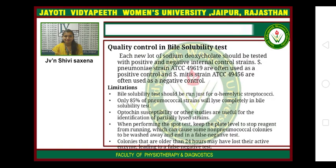Quality control in the bile solubility test: Each new lot of sodium deoxycholate should be tested with positive and negative internal control strains. Streptococcus pneumoniae strain ATCC 49619 is often used as a positive control, and Streptococcus mitis strain ATCC 49456 is often used as a negative control.